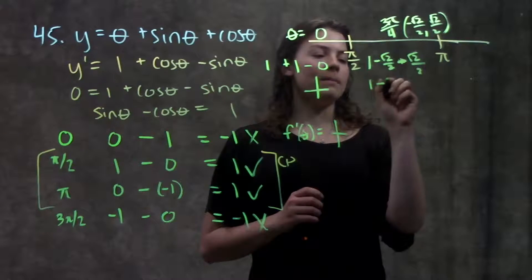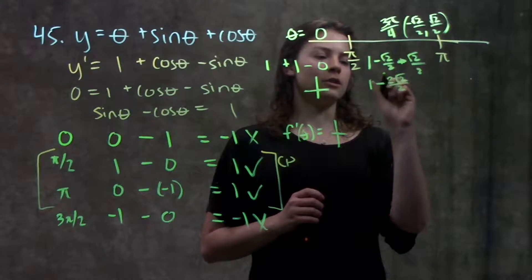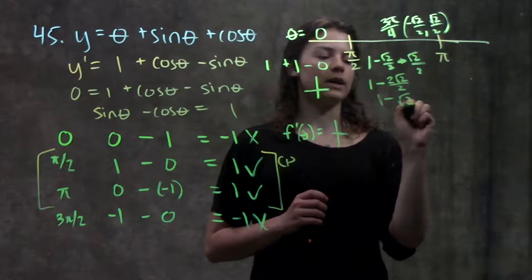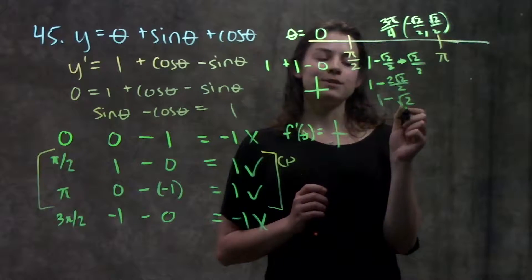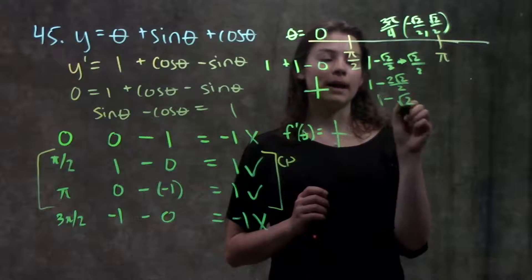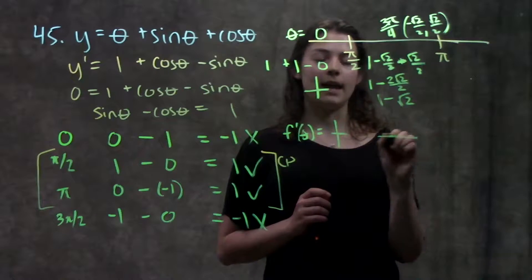Combining these, I get one minus two root two over two. Two's cancel, one minus root two. I may not know what root two is, but I do know that it's bigger than one. So one minus root two is going to give me a negative value.